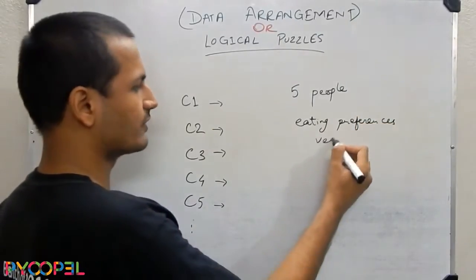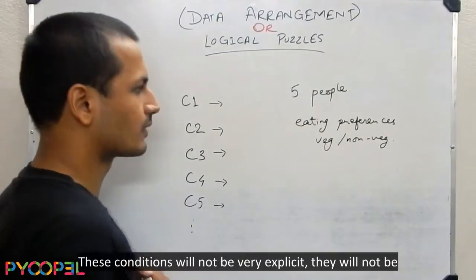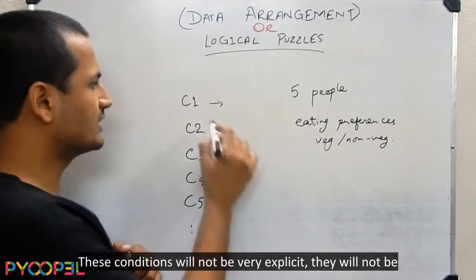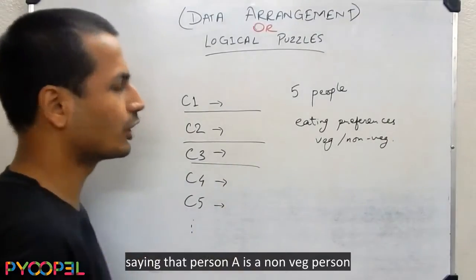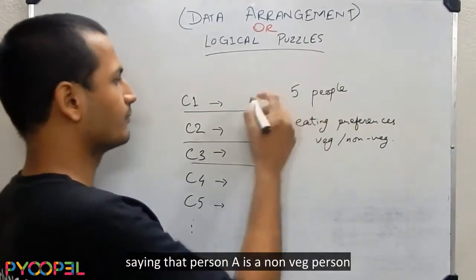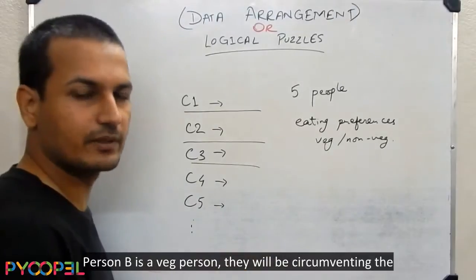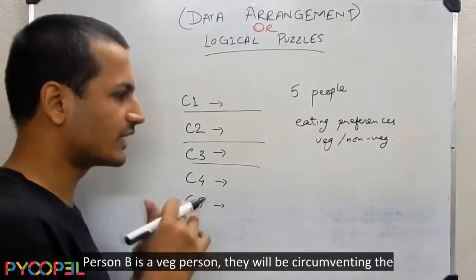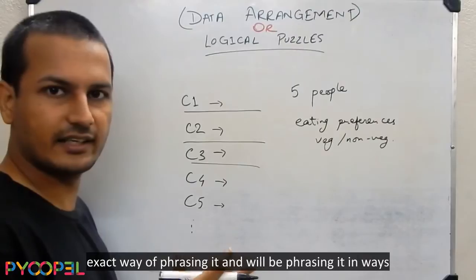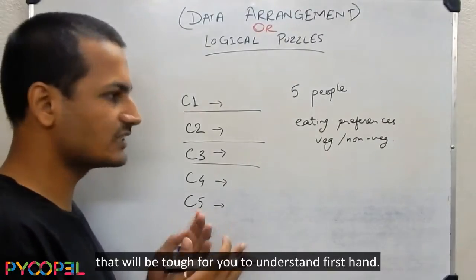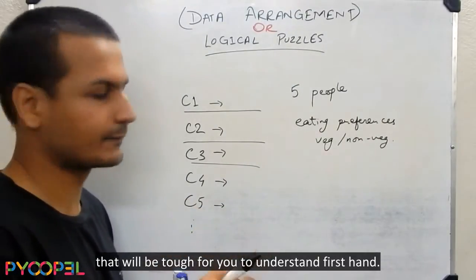Vegetarian or non-vegetarian. The conditions will not be very explicit — they will not be saying that person A is a non-veg person, person B is a veg person. They will be circumventing the exact way of phrasing it and will be phrasing it in ways that will be tough for you to actually understand first-hand.